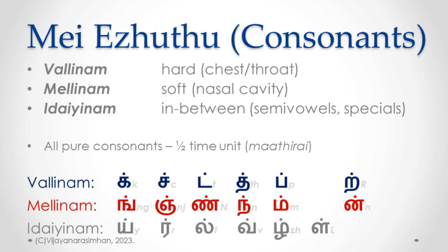This is a very scientifically based ordering, which we will discuss later. There are 18 consonants in Tamil, and we will learn them in detail in the third lesson.